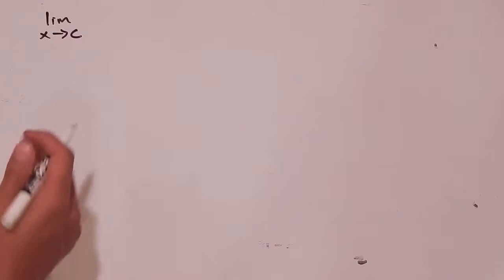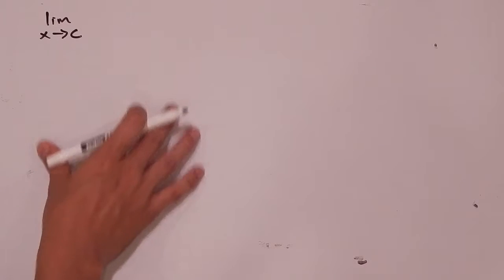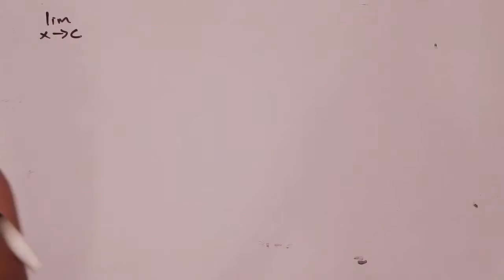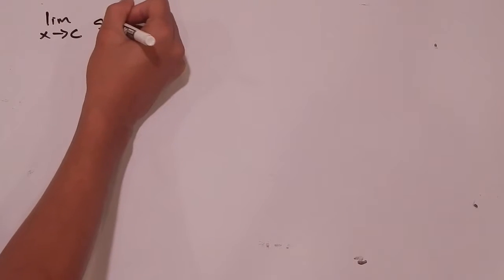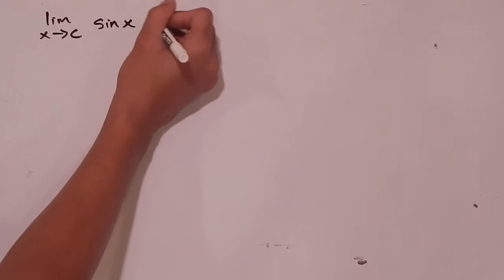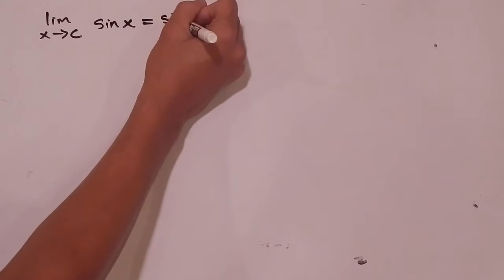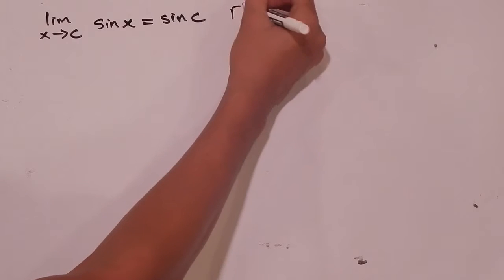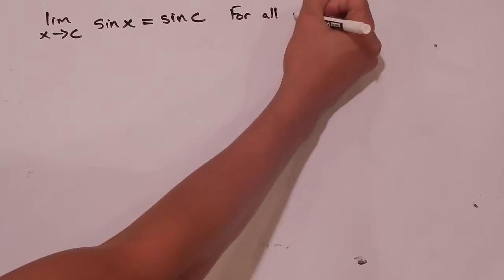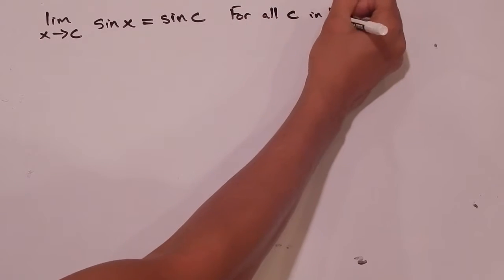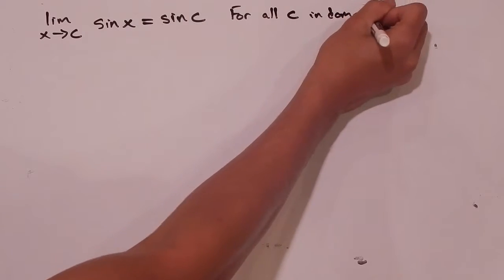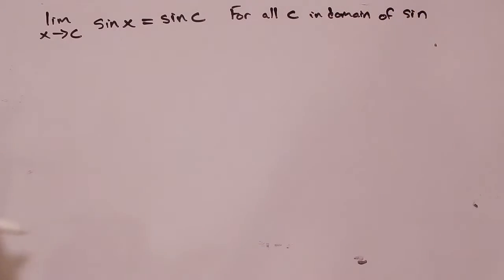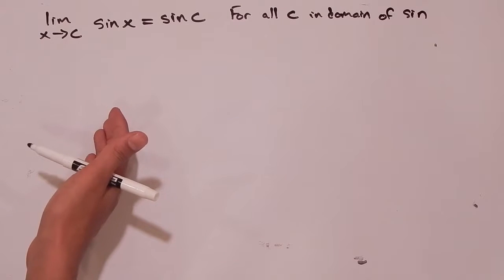To start the video out, we're going to make one assumption, and we're going to prove this later. It is a pretty difficult proof — it's a long proof — but it's necessary to make this assumption now so we can show you the other ones. And that is that the limit as x approaches c of sine of x is equal to sine of c, and this is for all c values in the domain of sine, which is actually just any real number because sine will take any value from negative infinity to infinity.